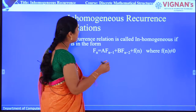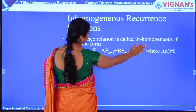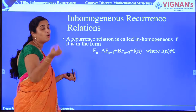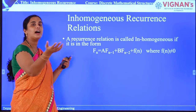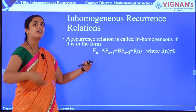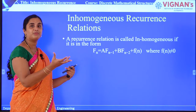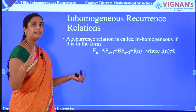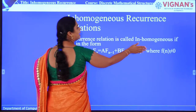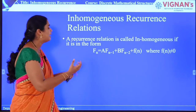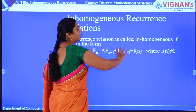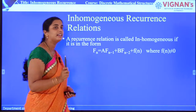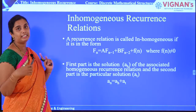Suppose this is the format. If this F(N) is not there, then this is the homogeneous recurrence relation, and to solve the homogeneous recurrence relation, either you can substitute the values, find future terms from the previous terms, or solve them using the characteristic roots method. But if F(N) is there — which is what makes the differentiation between homogeneous and non-homogeneous — then the method of solving will be different.